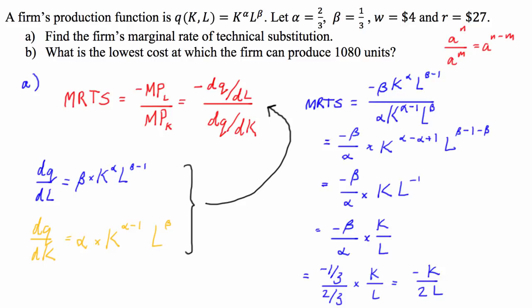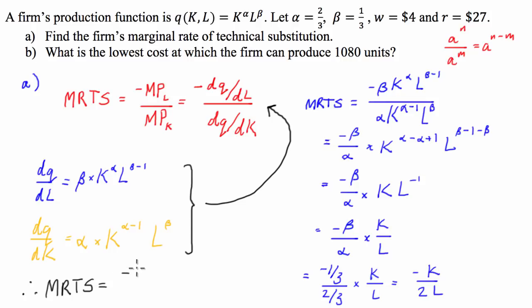Therefore, our marginal rate of technical substitution is equal to negative K divided by 2L. And that is part A done.